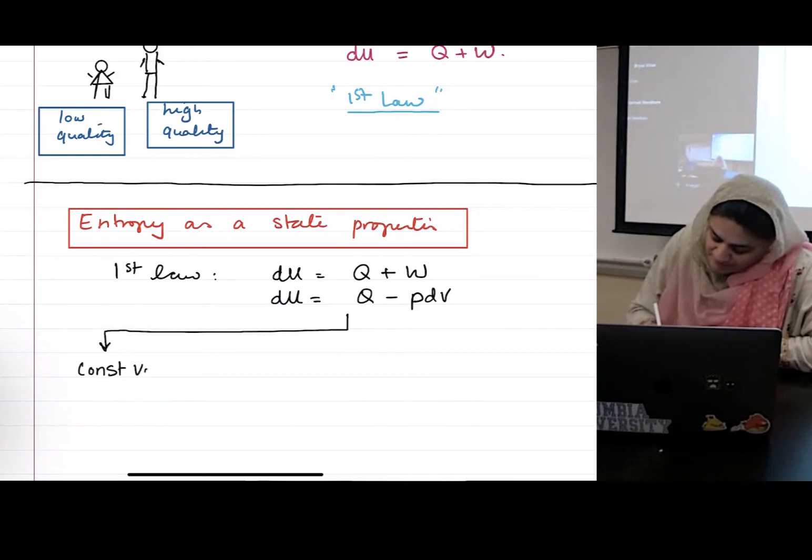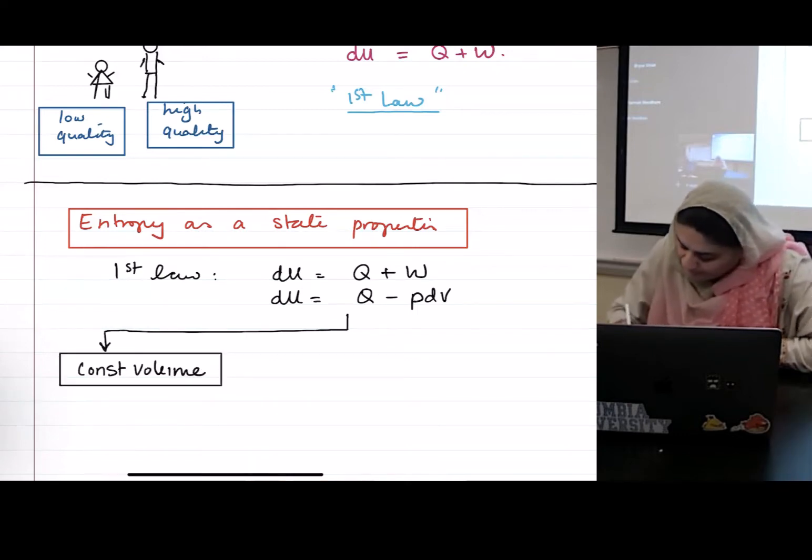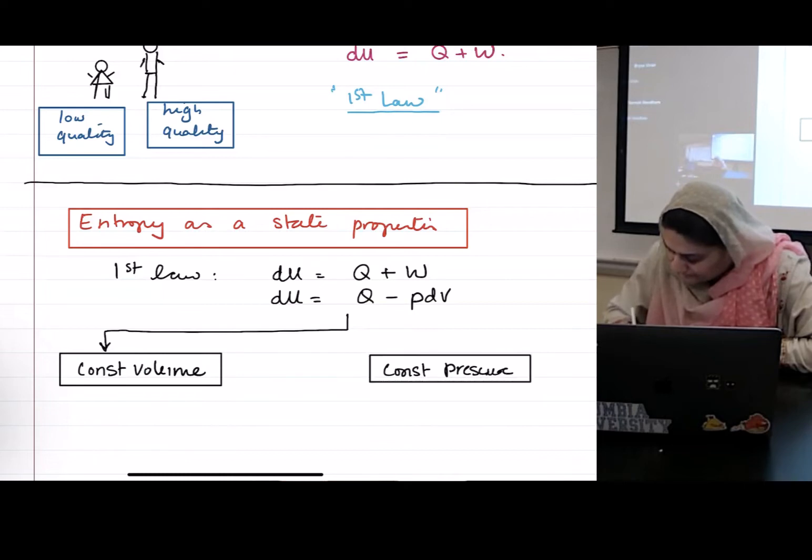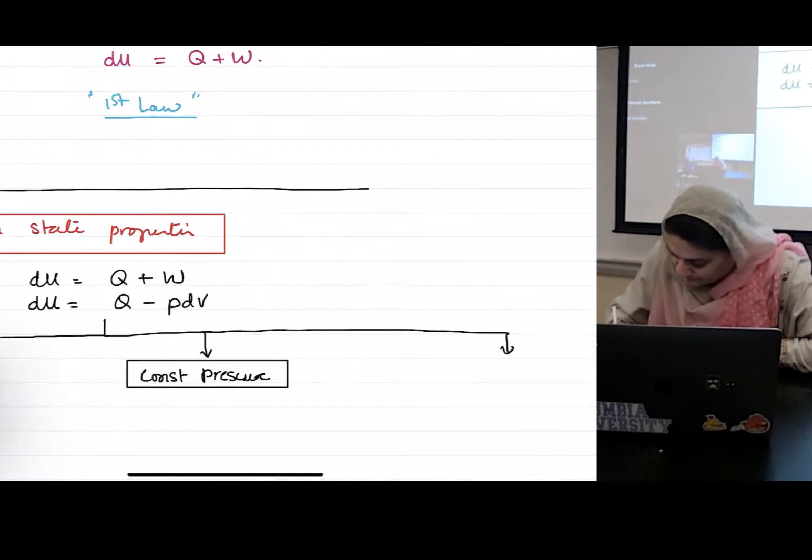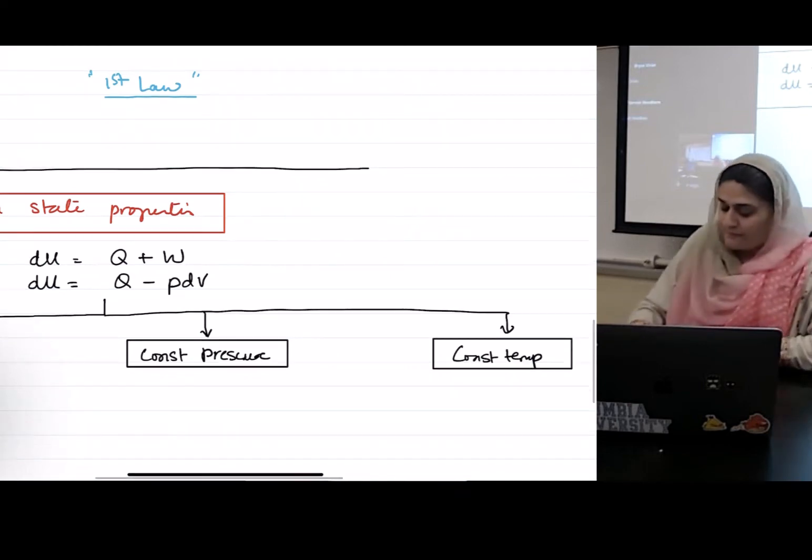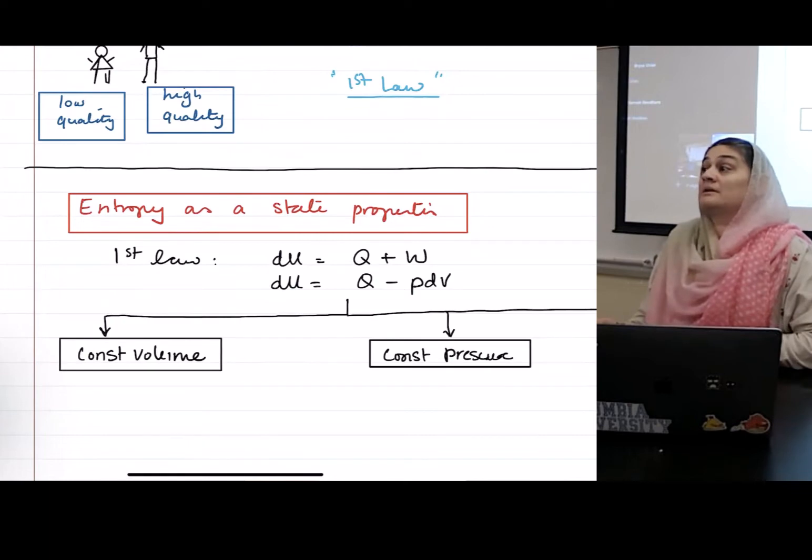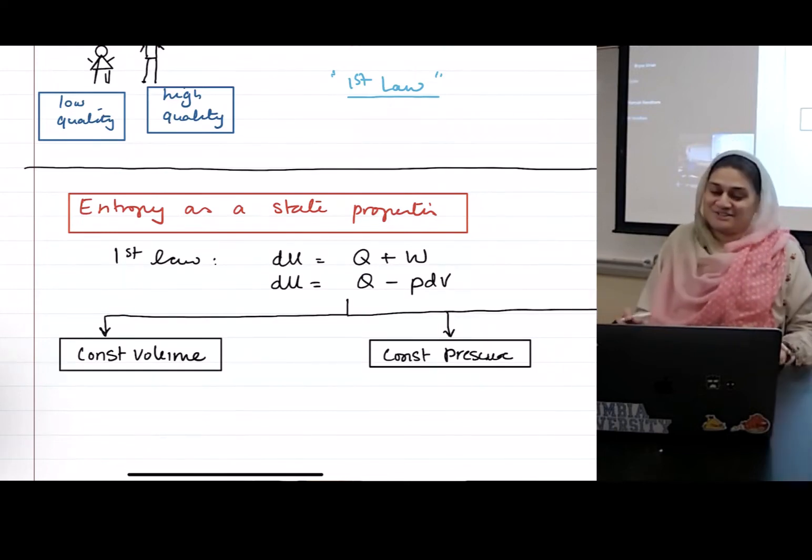Can I also write this as work done if I'm talking about compression expansion work? Minus PDV? So I am going to start constant volume, constant pressure, and constant temperature. Remember, constant volume are isochoric, constant pressure are isobaric, constant temperature are isothermal processes. Excellent. So I'm going to start at constant volume processes.